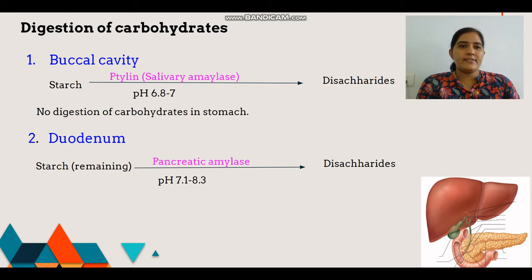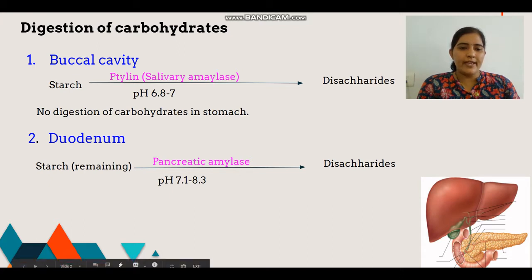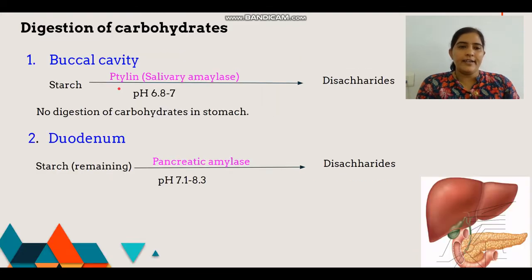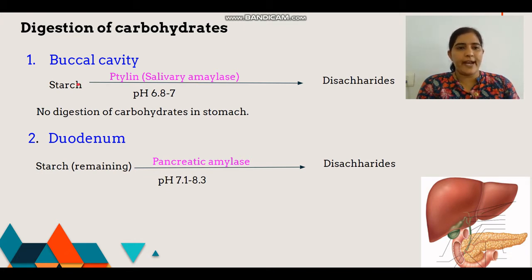Carbohydrate digestion begins in the buccal cavity. Here, salivary amylase, also called ptyalin, acts on cooked or boiled starch and converts it to disaccharides. When saliva is mixed with the food, we call it semi-digested.